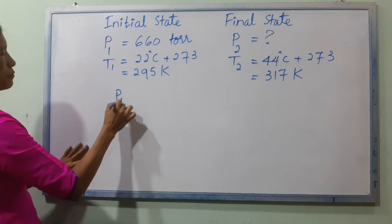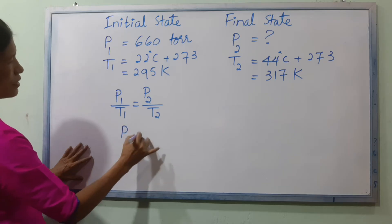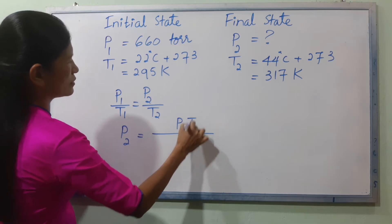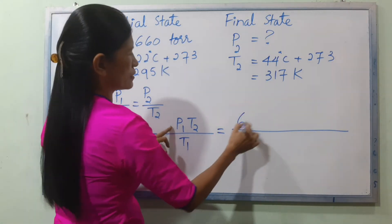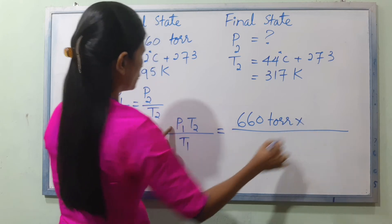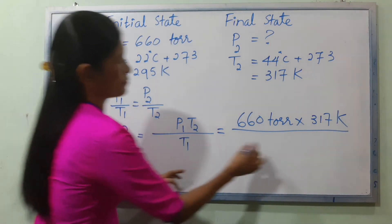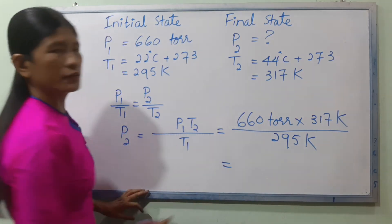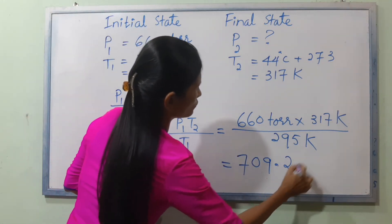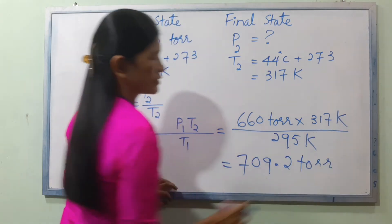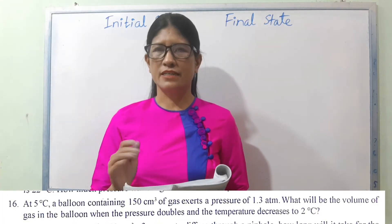Using the Gay-Lussac relationship: P1 / T1 = P2 / T2. So P2 = P1 × T2 / T1. T2 is 317 Kelvin, T1 is 295 Kelvin. We calculate P2 in torr. That concludes this pressure unit group. Moving on to number 16.